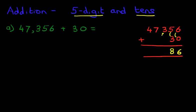Then we have the hundreds: 3 plus 0. The answer is 3. The thousands: 7 plus 0. The answer is 7. And lastly, the ten thousands: 4 plus 0. The answer is 4.